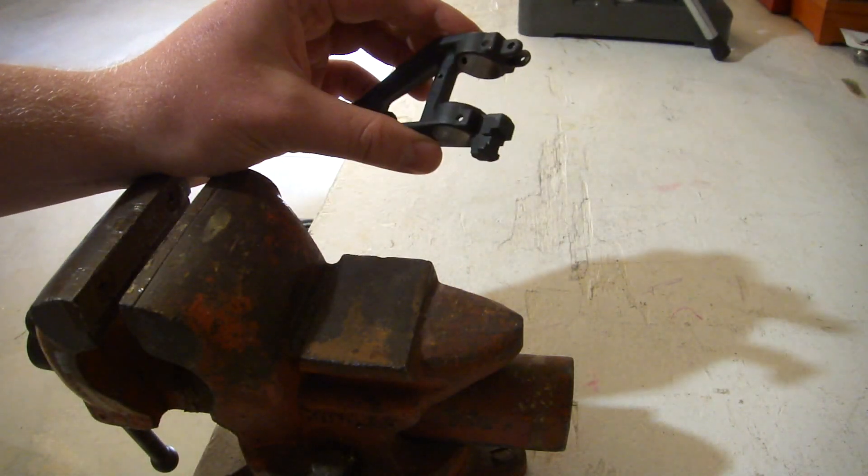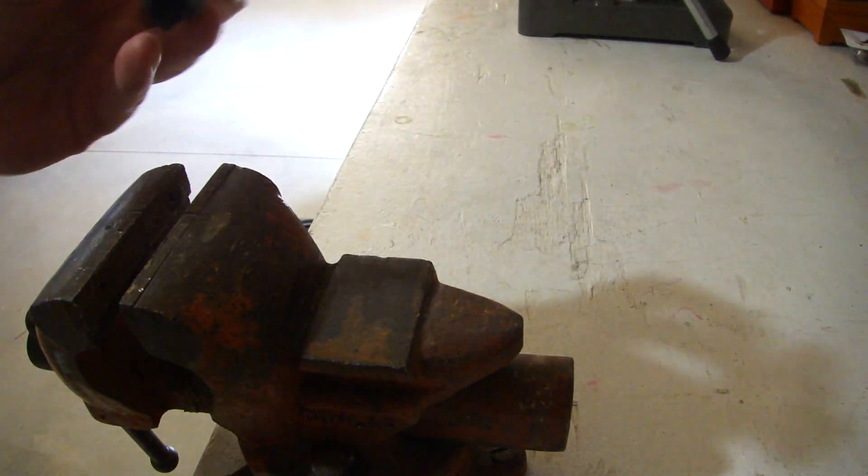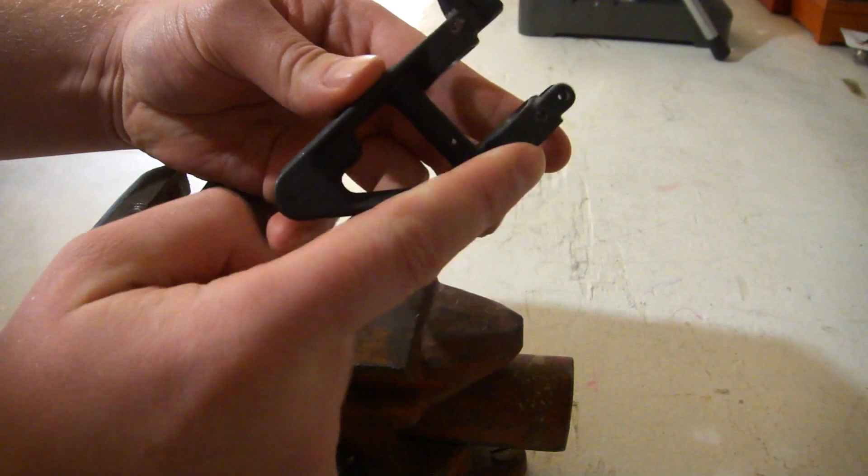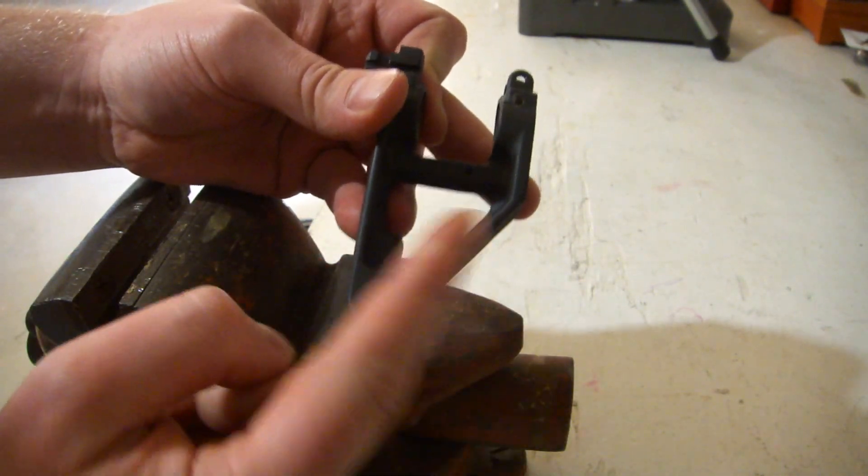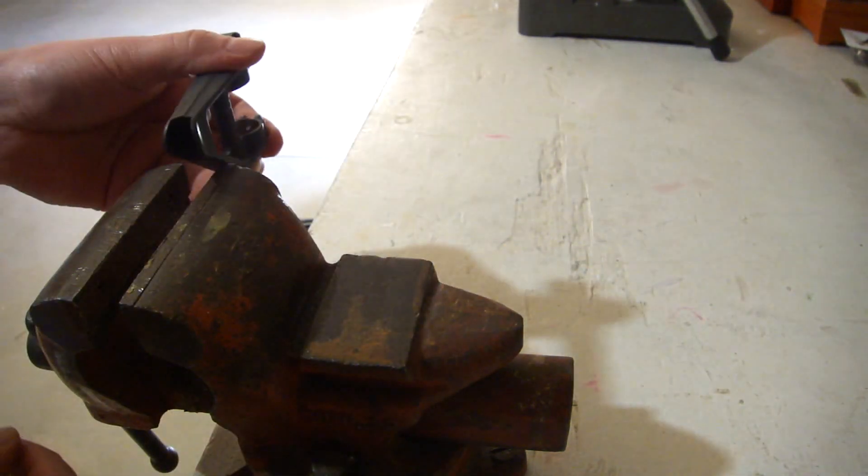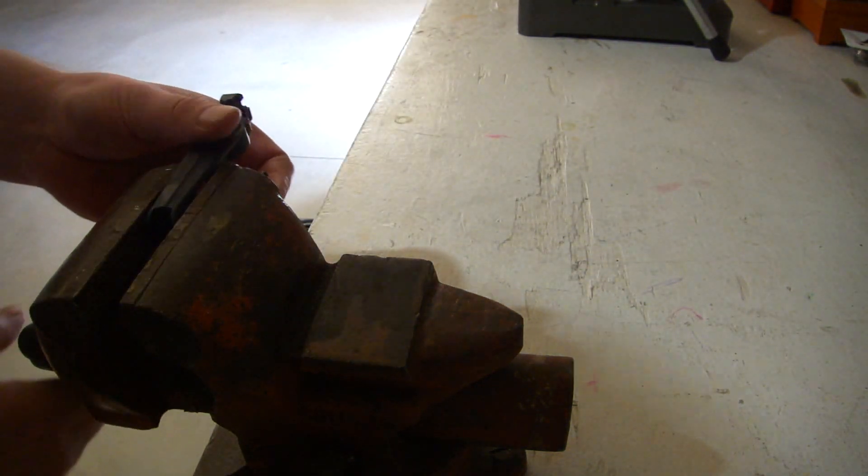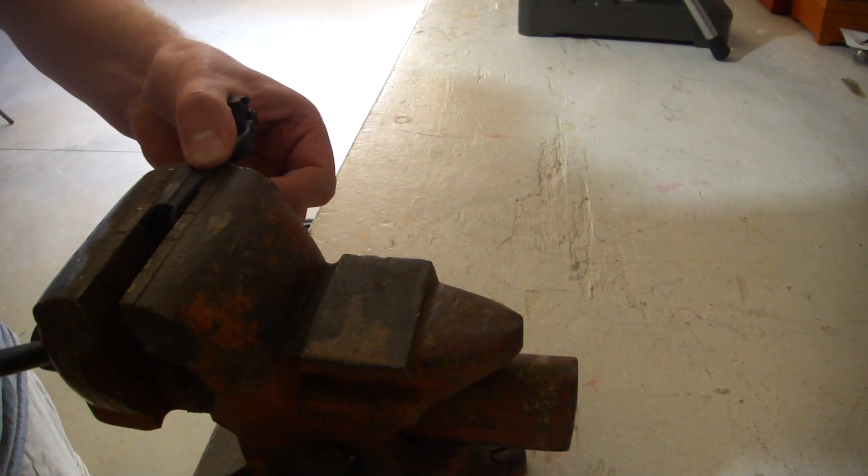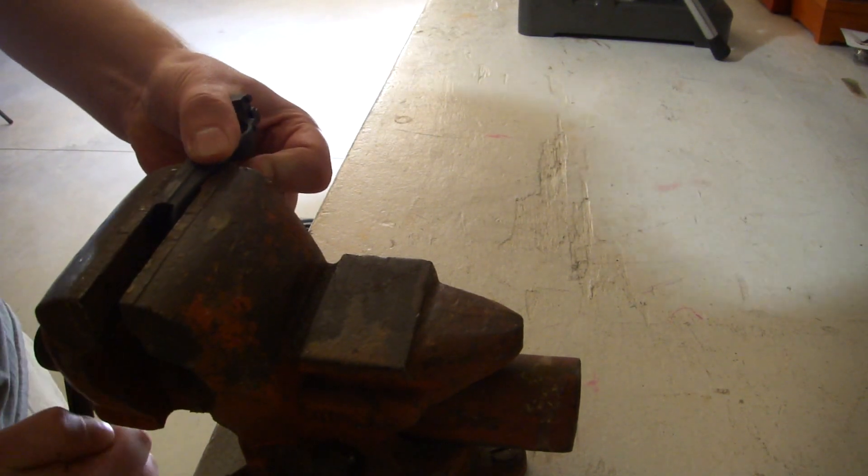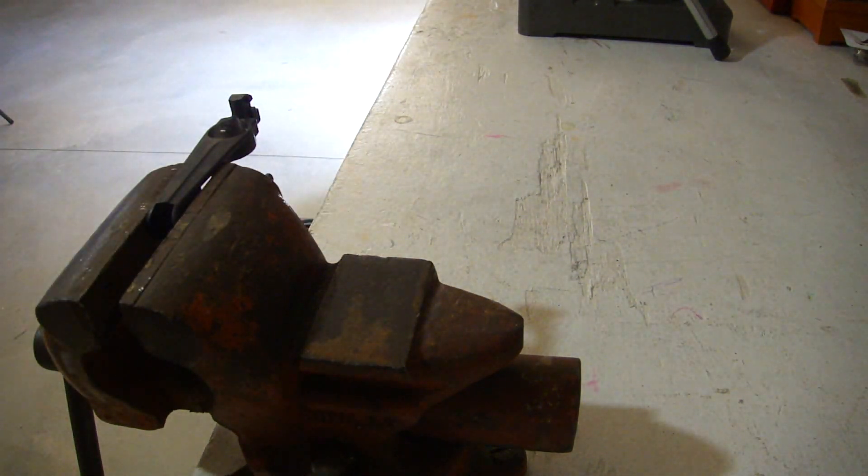When clamping the front sight in the vise to cut it, I would clamp it by the sight tower instead of where the barrel goes through because you're going to cut all those away and throw it away anyway, so it doesn't matter if you mess this up. So I'm going to choose to clamp it in the vise like this.